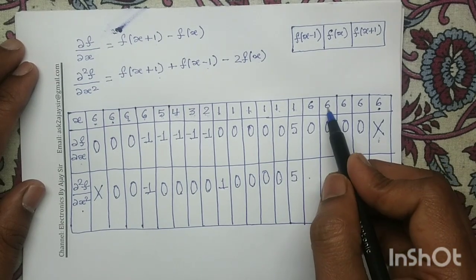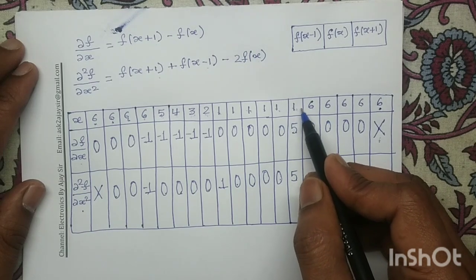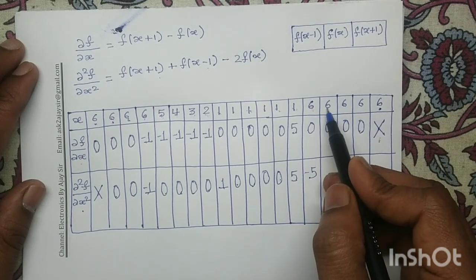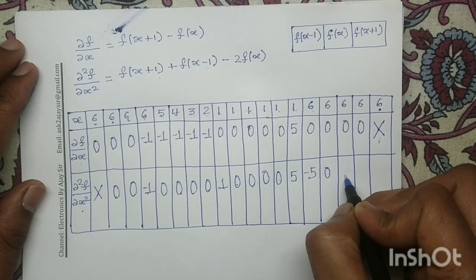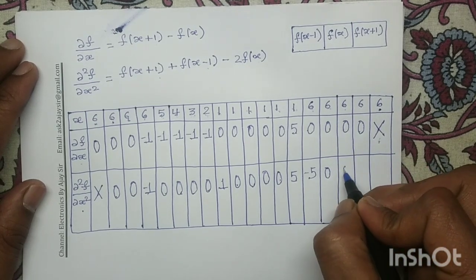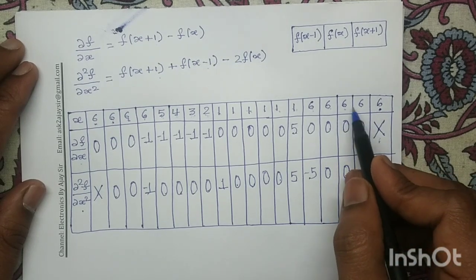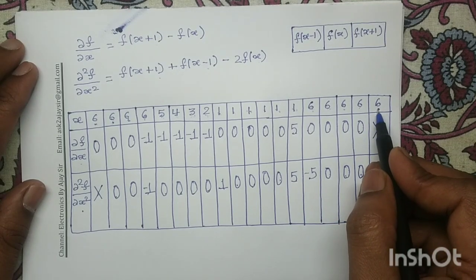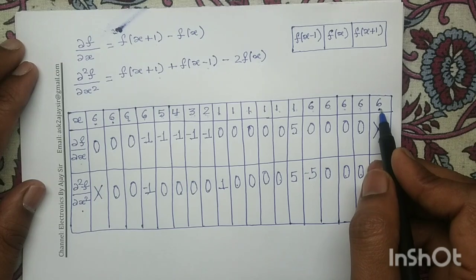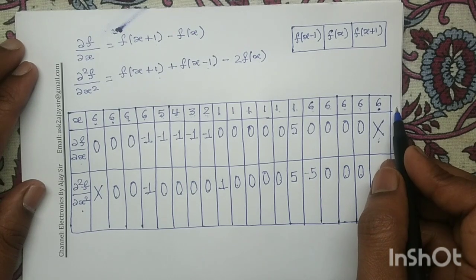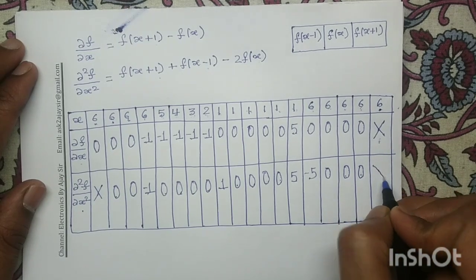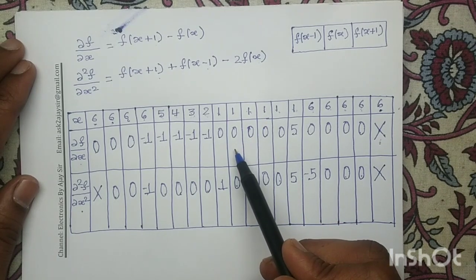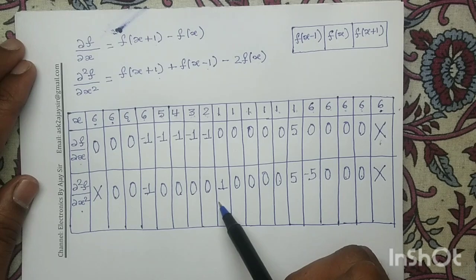At the next point, 6 plus 1 minus 2×6 = −5. Then 6 plus 6 minus 2×6 = 0 at the following positions. At the last position, f(x) and f(x-1) are defined but f(x+1) is not defined, so we put a cross mark. So for this given input strip we have computed its first order derivative and second order derivative. Thank you.